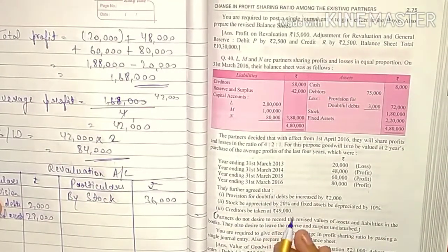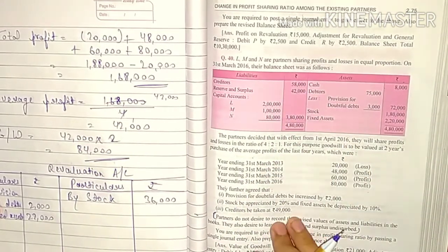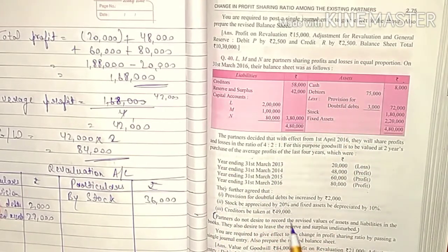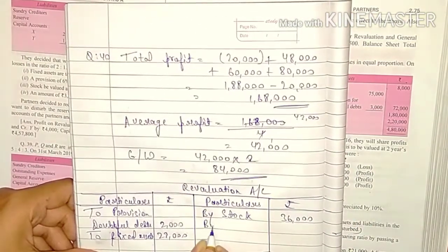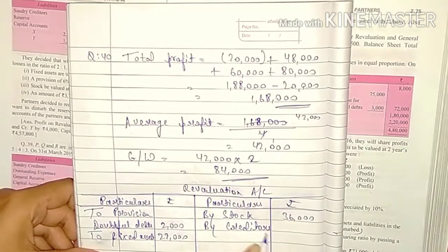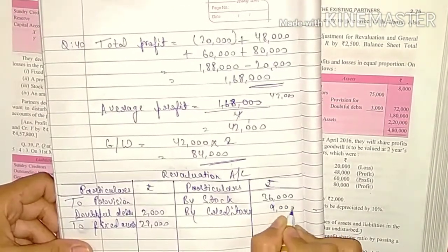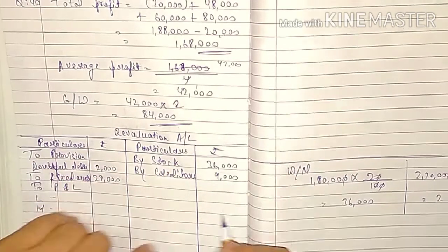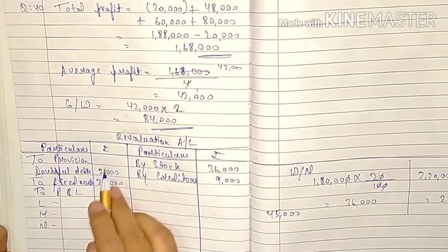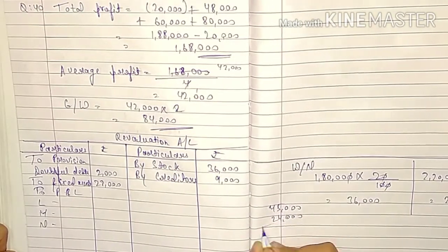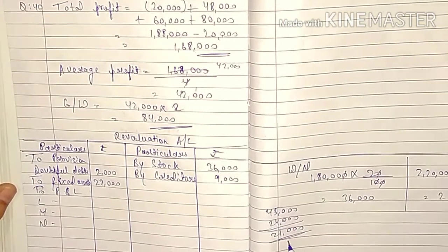Fourth point: creditors taken at 49,000. Creditors were 58,000 in the balance sheet; now 49,000 — creditor value decreased, meaning profit. Entry on the credit side. Amount: 58,000 − 49,000 = 9,000. Credit side total: 36,000 + 9,000 = 45,000. Debit side total: 24,000. Revaluation profit = 45,000 − 24,000 = 21,000.